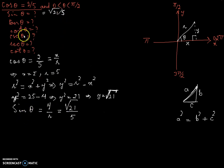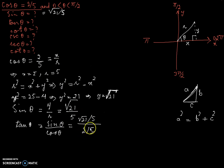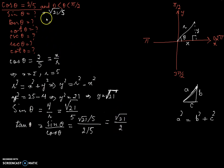Now let's find tan θ. You can write tan θ as sine θ divided by cos θ, which is (√21 / 5) divided by (2 / 5), which equals √21 / 2. So tan θ = √21 / 2.